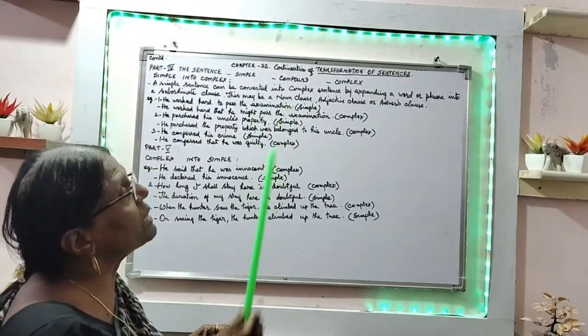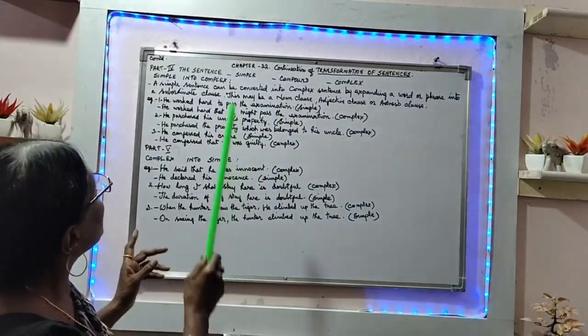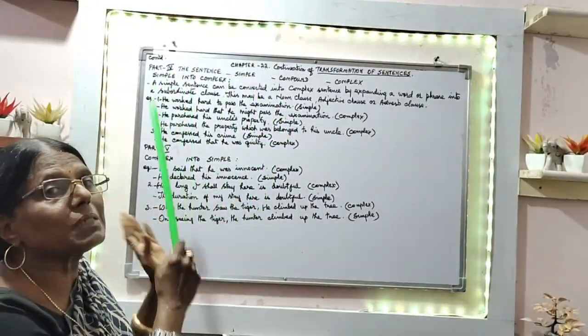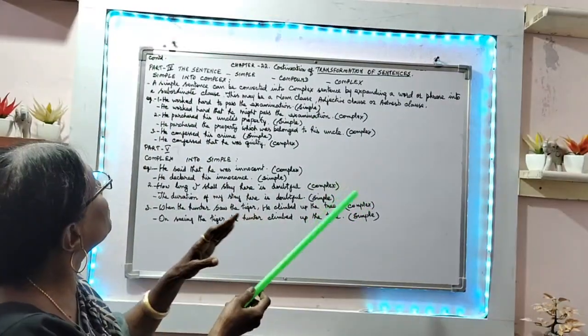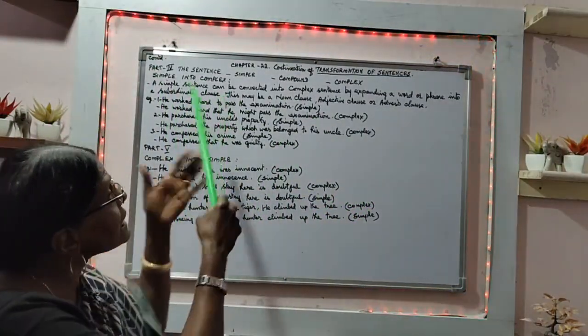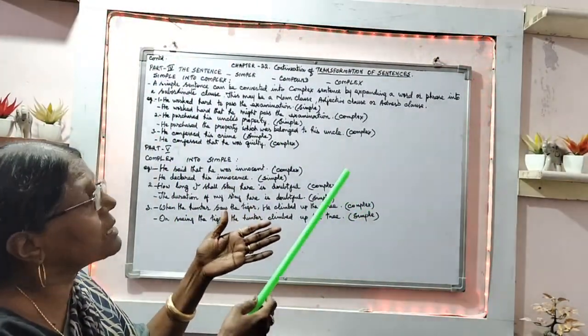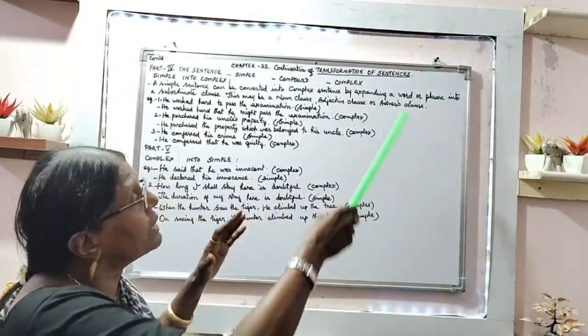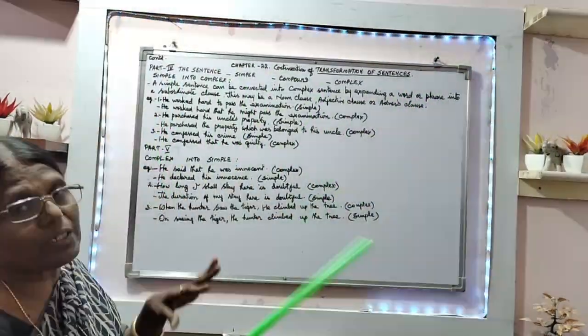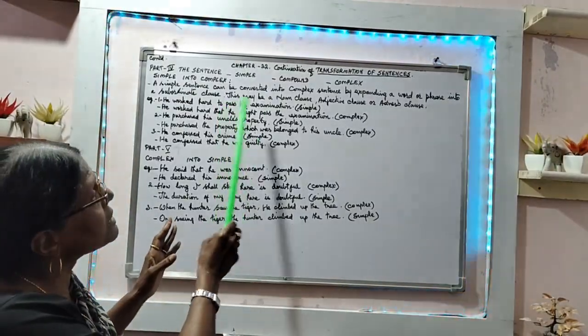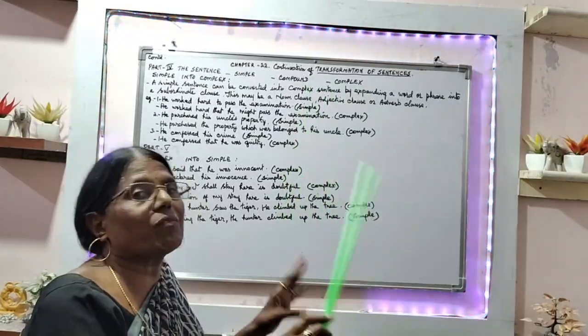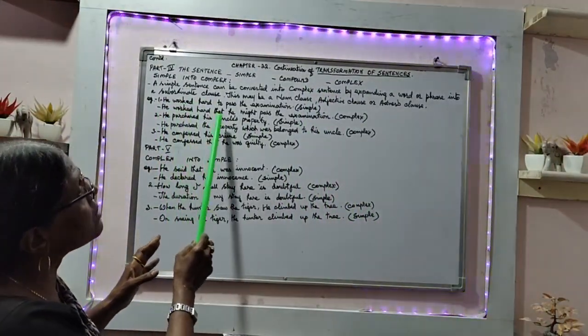Welcome back. Today we are going to learn how simple sentences are changed into complex sentences. A simple sentence can be converted into a complex sentence by expanding a word or phrase into a subordinate clause. This may be a noun clause, adjective clause, or adverb clause.